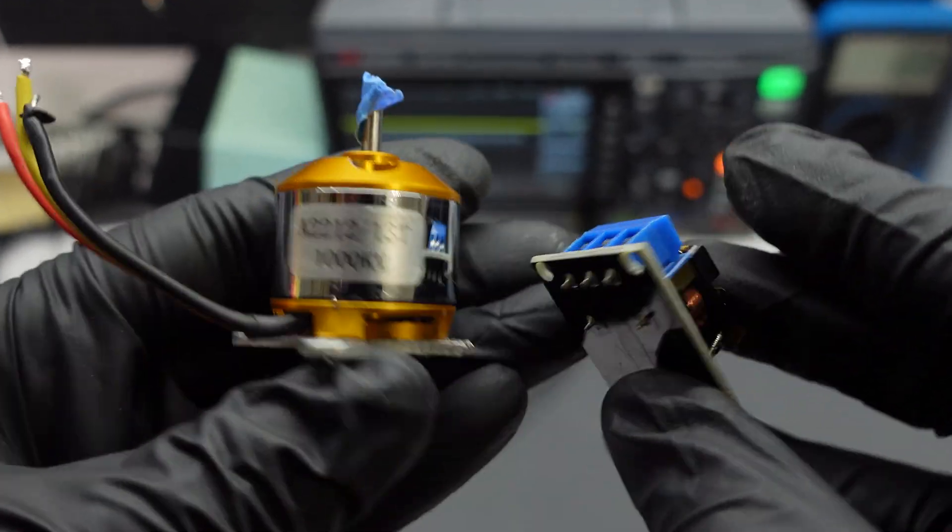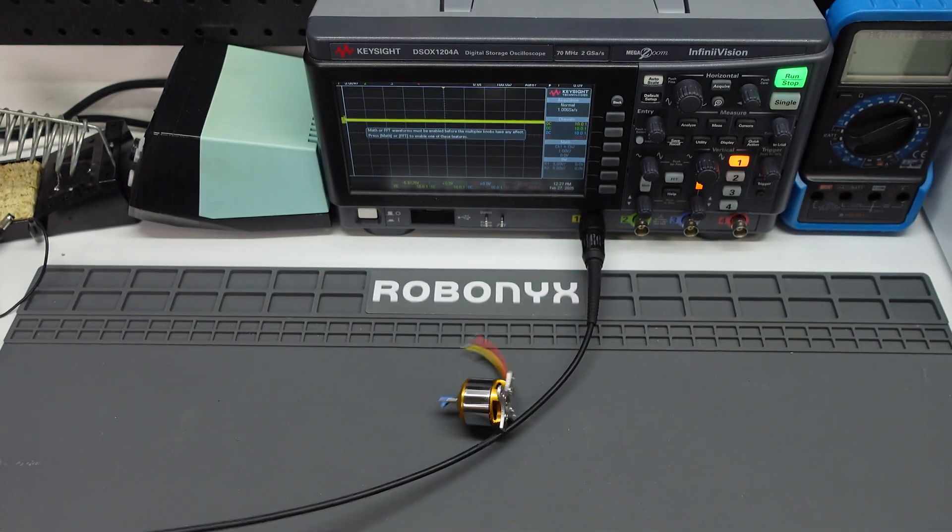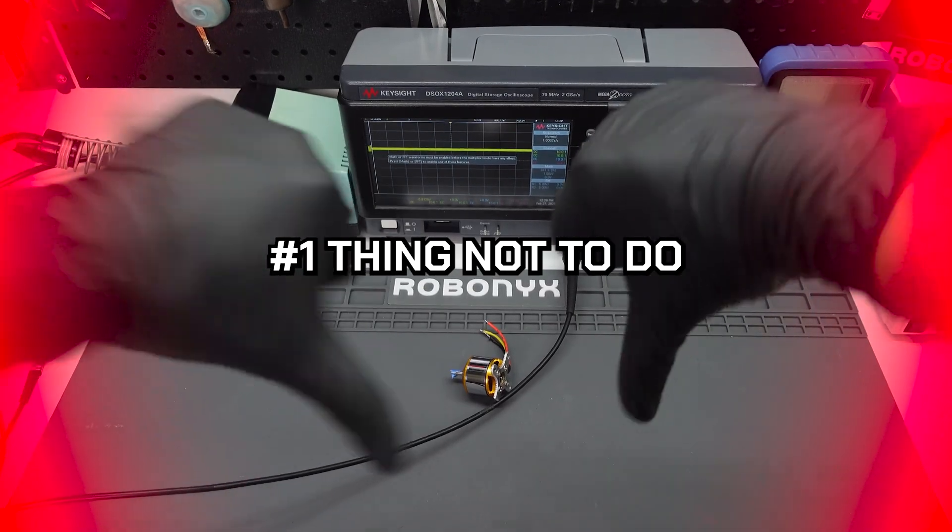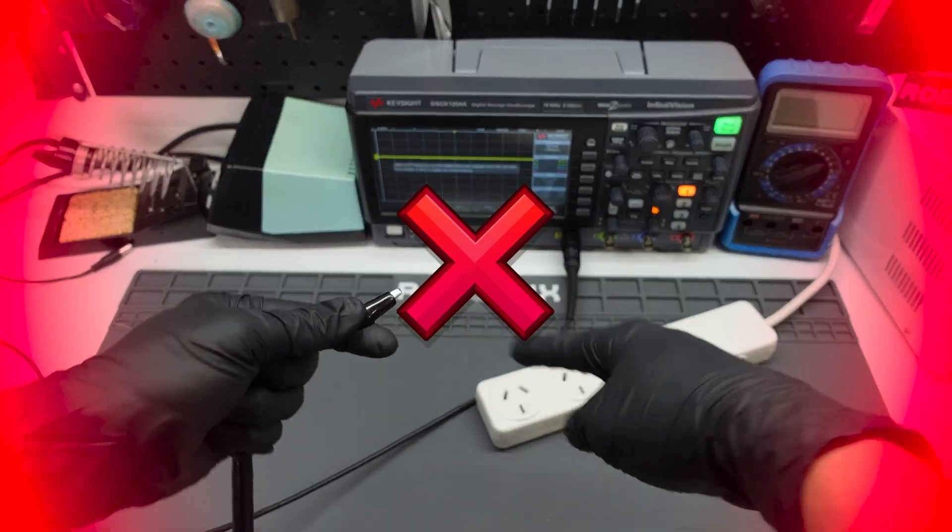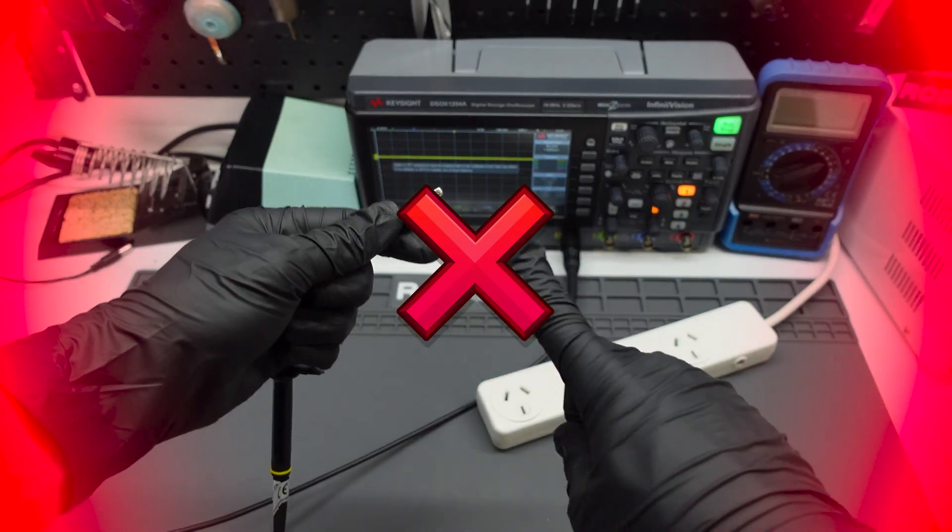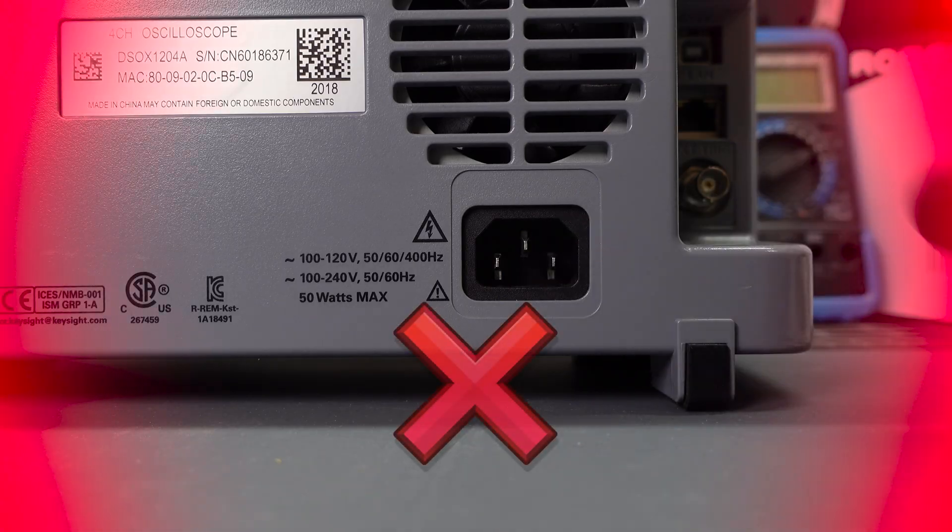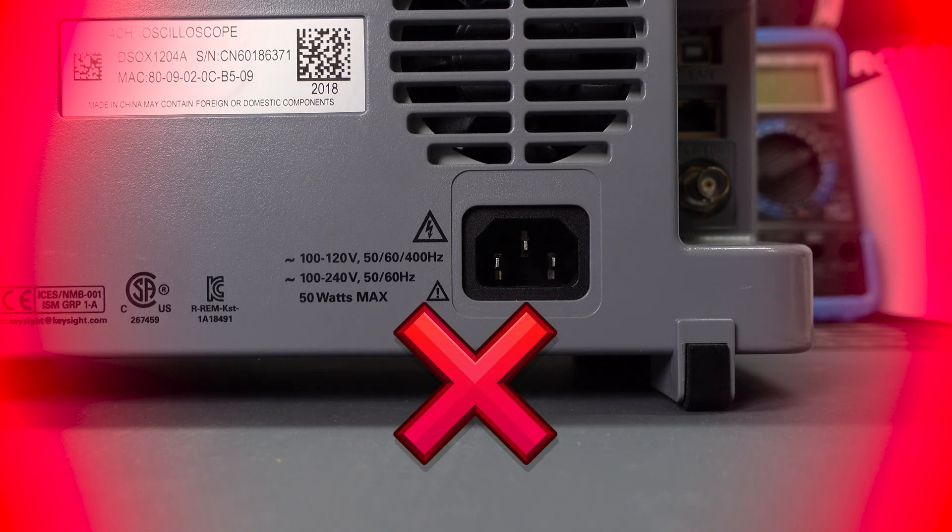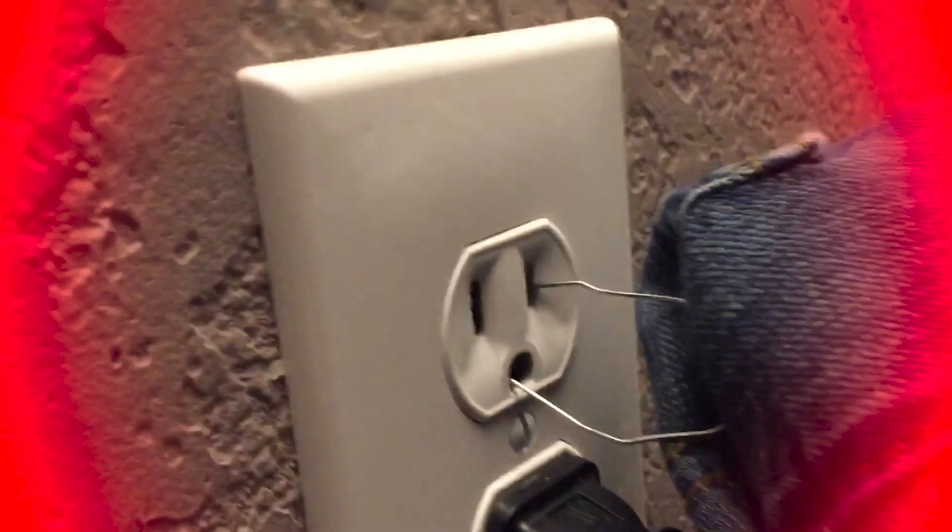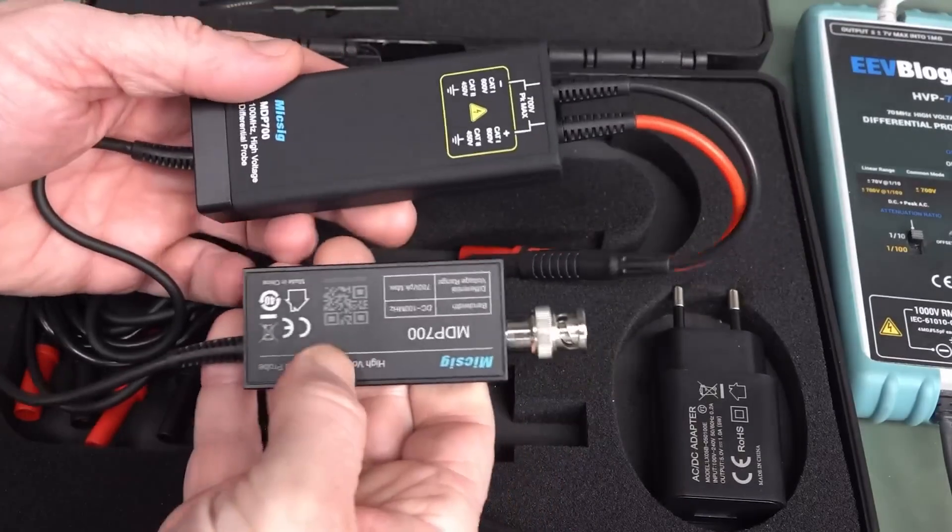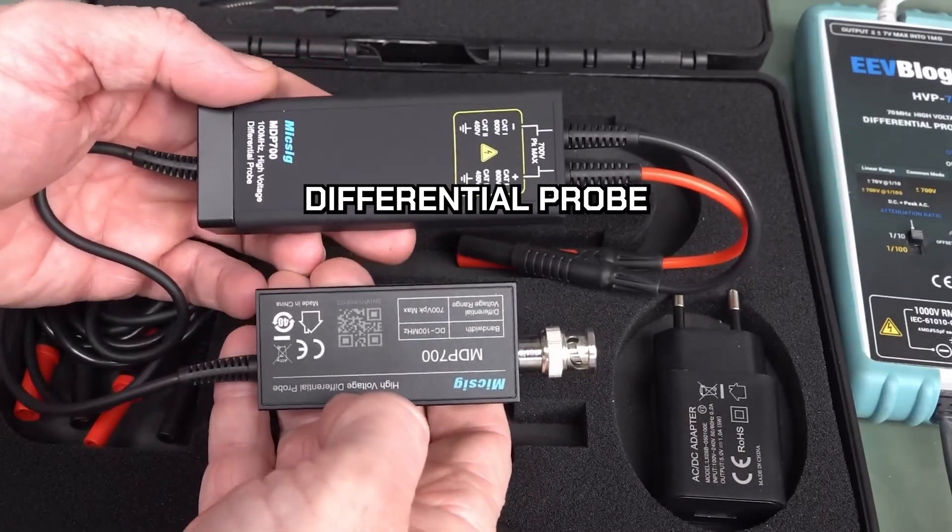If you're working with inductive loads, such as motors and relays, use protection diodes to prevent against voltage spikes. And the number one thing that you should not do is connect the oscilloscope ground clip to mains power. Because oscilloscope grounds are tied to mains earth, if you connect your probe ground to live mains voltage, you'll short it directly to earth, which could destroy your oscilloscope, trip the circuit breaker, and possibly even shock you. So use a differential probe for mains power measurements.